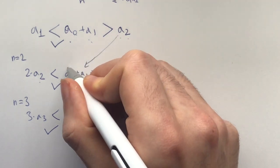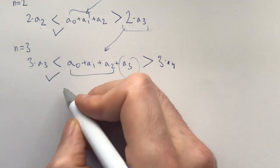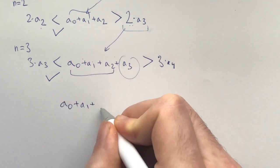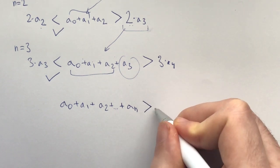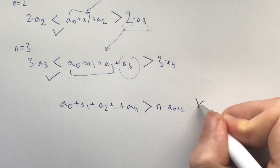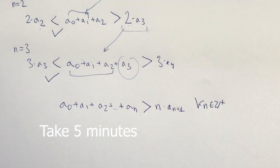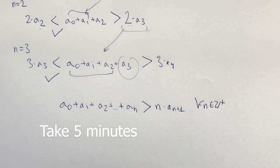We can see a pattern emerge: if there doesn't exist a single n satisfying the condition, we would have a_0 plus a_1 plus a_2 plus ... plus a_n strictly greater than n times a_{n+1} for all positive integers n. Now take 5 minutes and see what this makes you feel — is this hinting at anything for you?